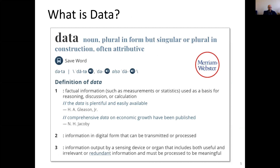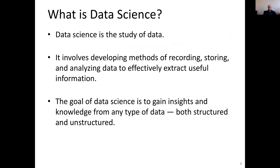What is data? It's factual information. There are several definitions of that. There is a lot of data around, but you need to make sense out of it so that you can convert it to some kind of value. Data science is a study of data. It involves developing methods of recording, storing, and analyzing data to effectively extract useful information. There are a lot of data around — it only makes sense if you extract useful information out of it. The goal of data science is to gain insights and knowledge from any type of data.